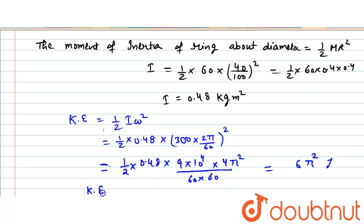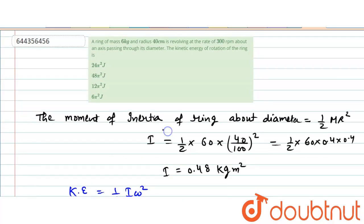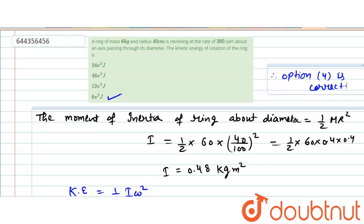So, kinetic energy becomes 6 pi square Joule and we can say that option number 4 is correct. Option number 4 is correct.